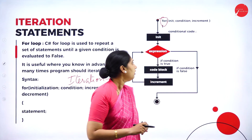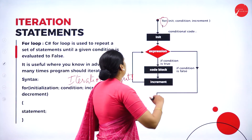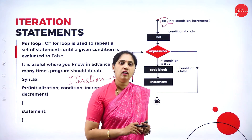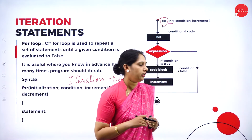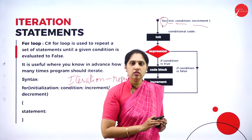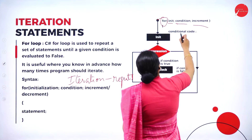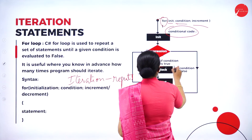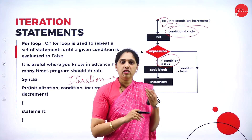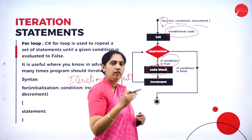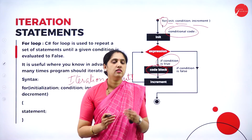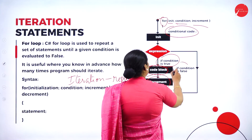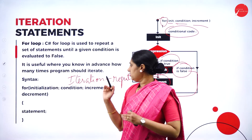For the for loop, the syntax is: first you have initialization — initialize the variable, say i to 0. Then the condition — how many times the loop has to be executed. Next is the increment — each time we check the condition and increment the variable. If the condition is satisfied, the code inside the for loop will be executed. If the condition is true, the code block executes; when done, the variable i is incremented. If the condition is false, it comes out of the loop and the statement will not be executed.